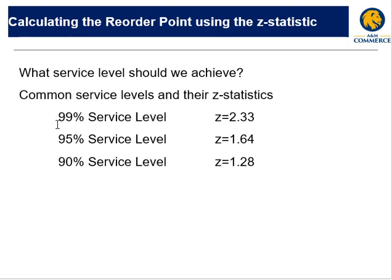If I want a 99% service level, I need a z of 2.33. If I need to cover 95% of all the items that come in during a lead time, I need a z of 1.64. 90% service level is a z of 1.28.